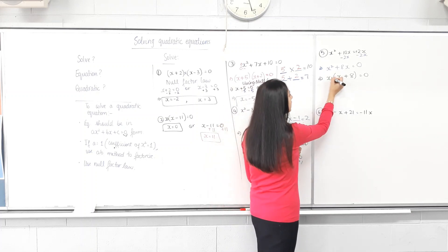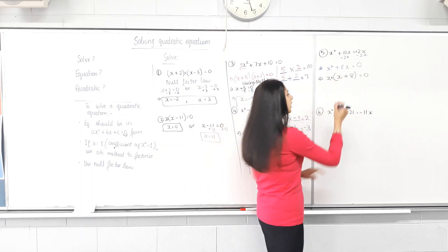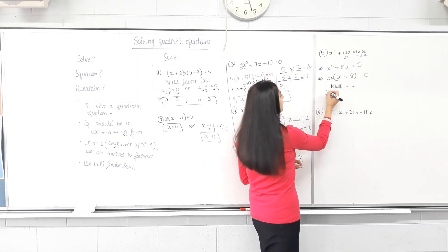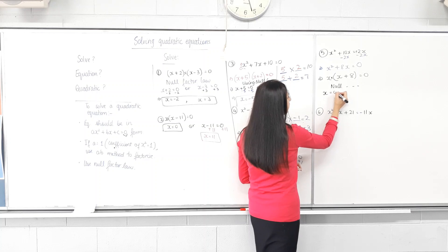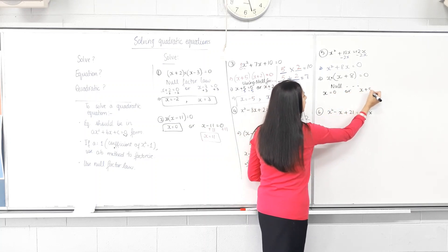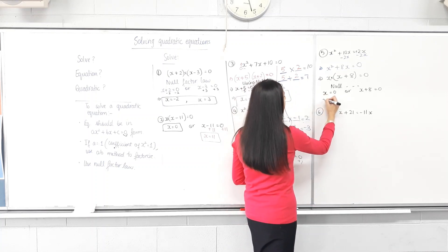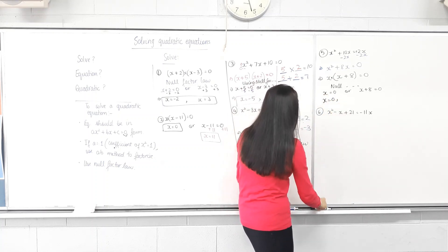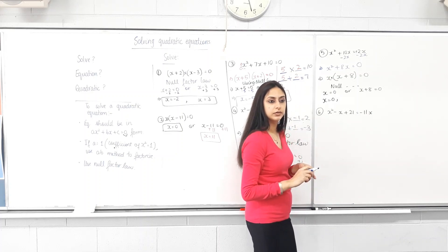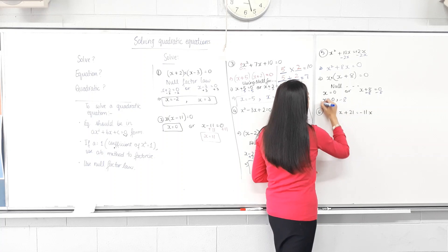Is it two things times together to give 0? So can I use null factor law? Yes. So x equals 0 — that's our first factor — or x plus 8 equals 0. Minus 8 from both sides: x equals negative 8. Make sense?